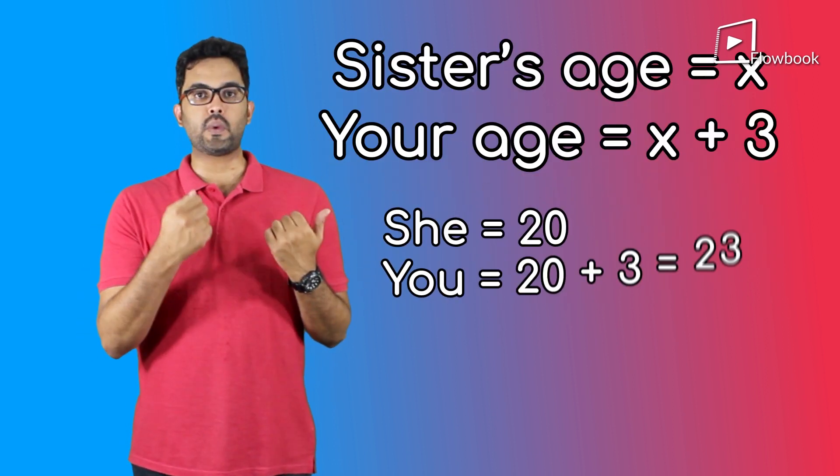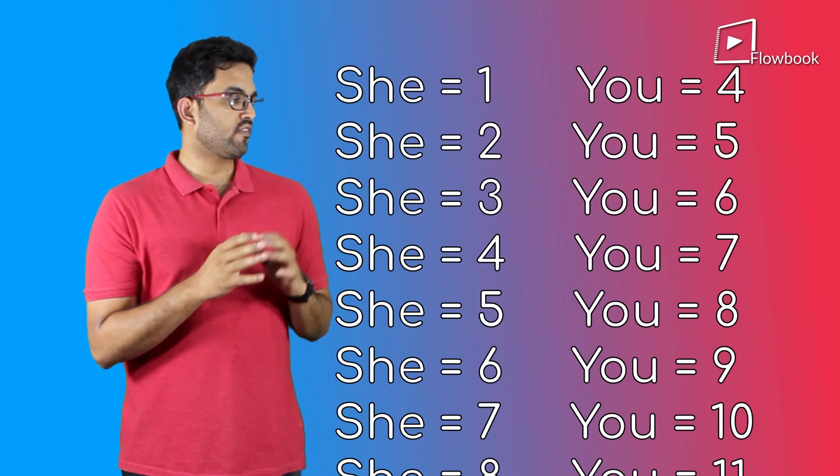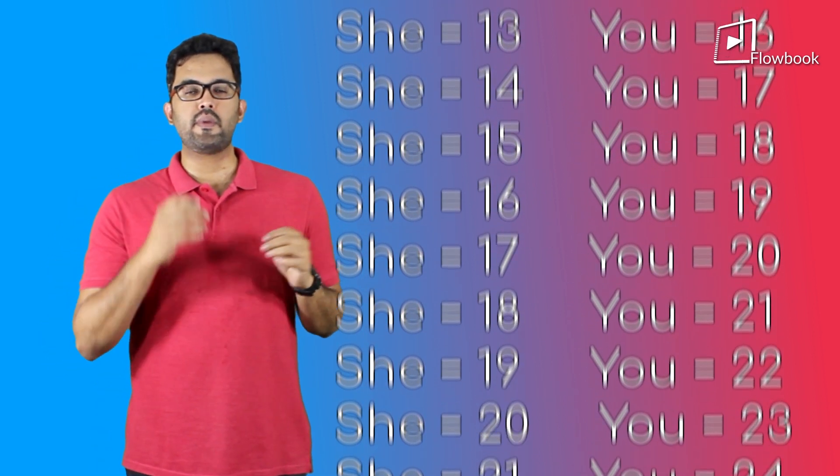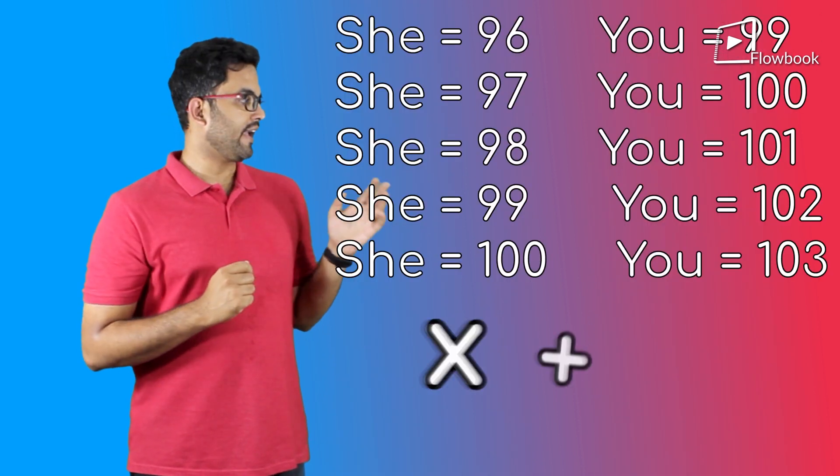If they are 20, then you are 23. 97, you are 100 and so on. So instead of writing it as a table of numbers, we can represent all this using algebra as simply X plus 3.